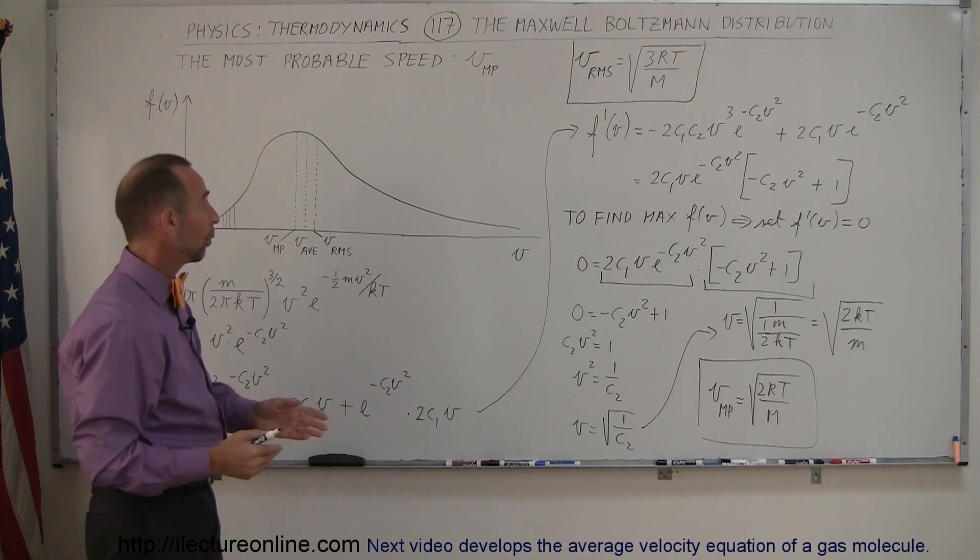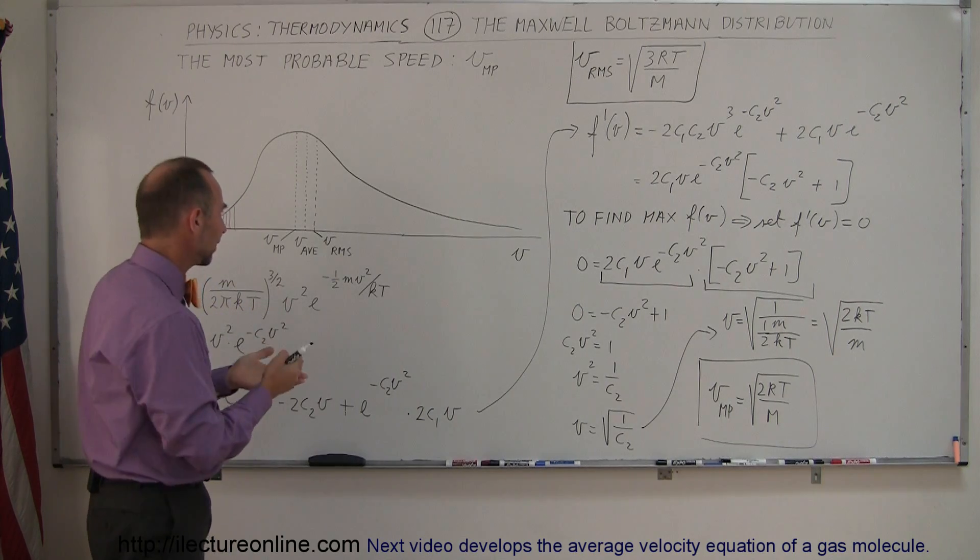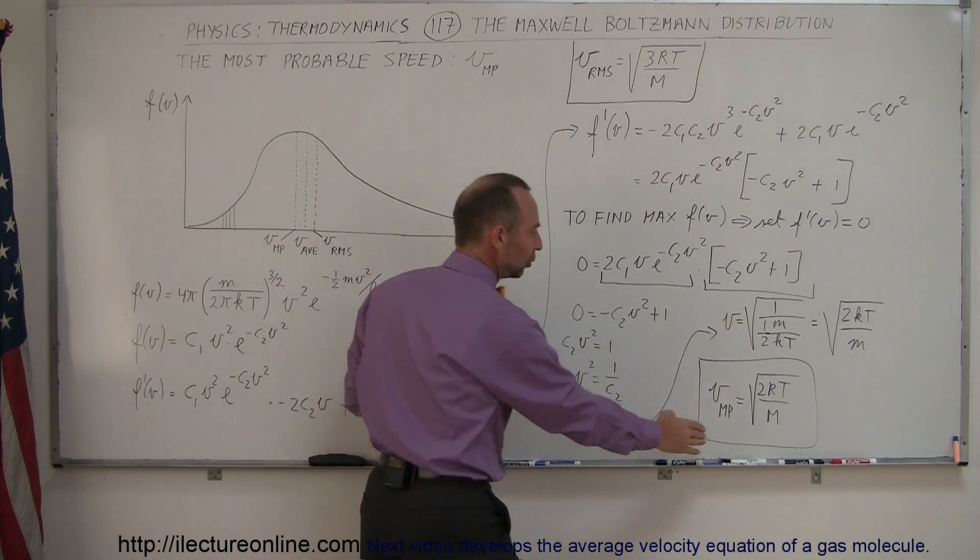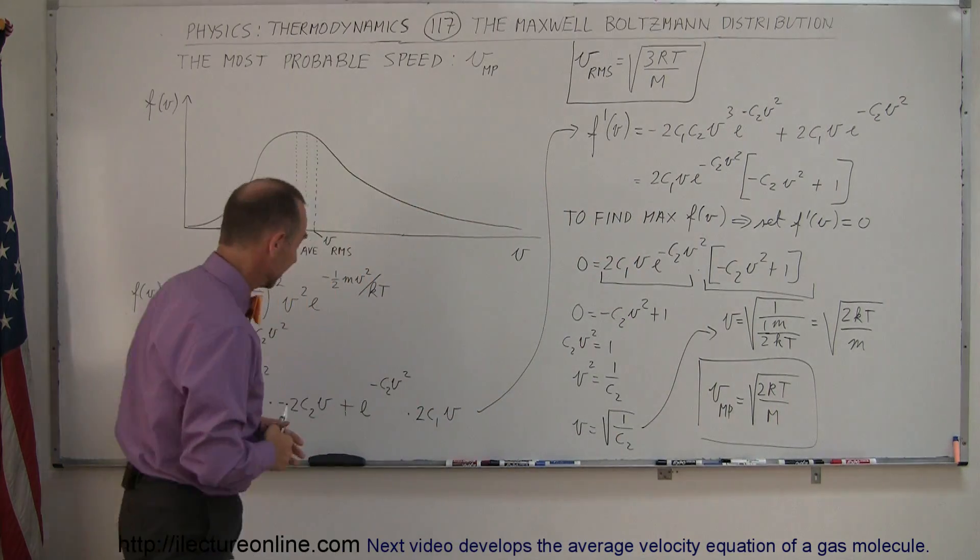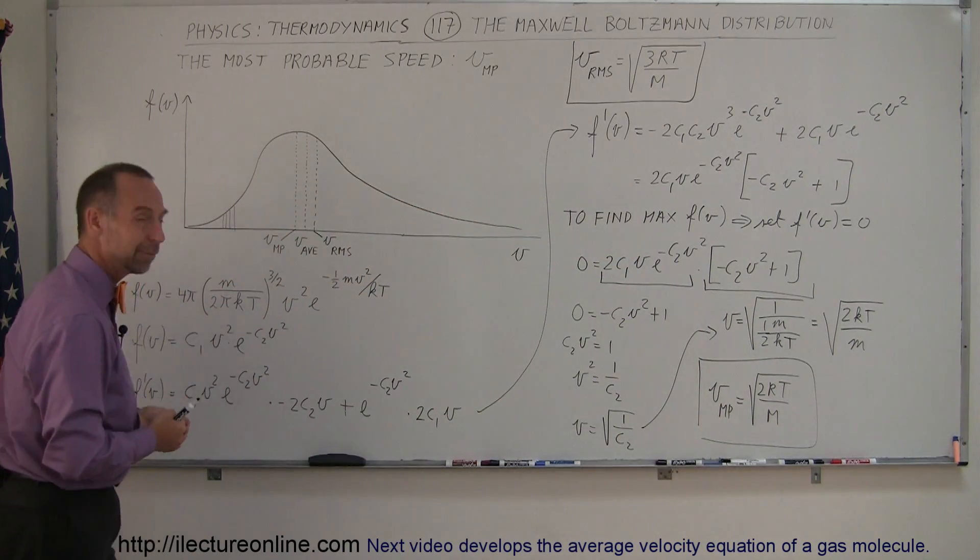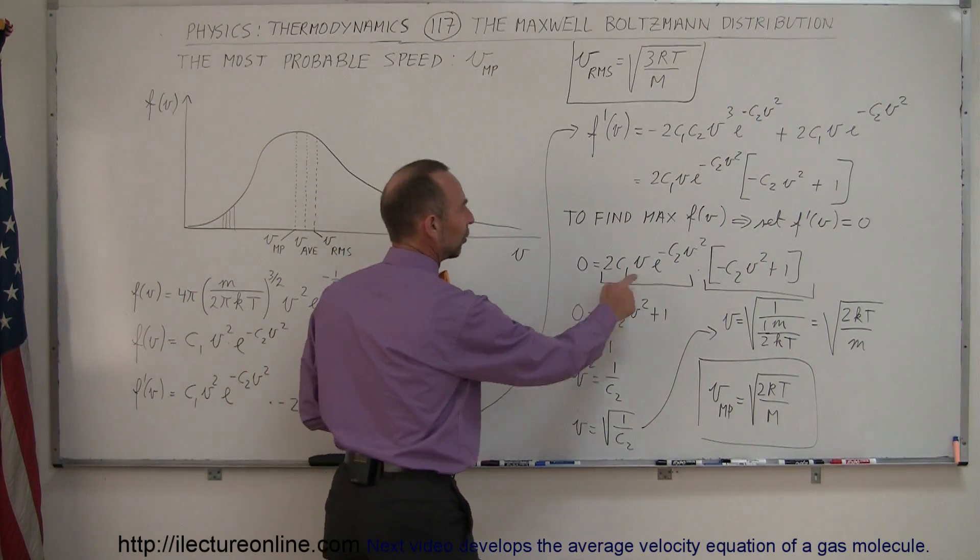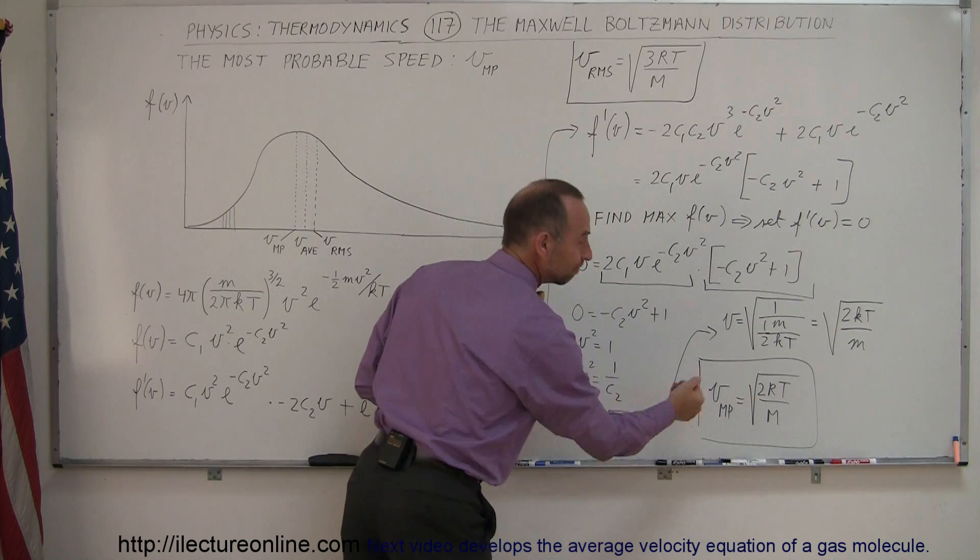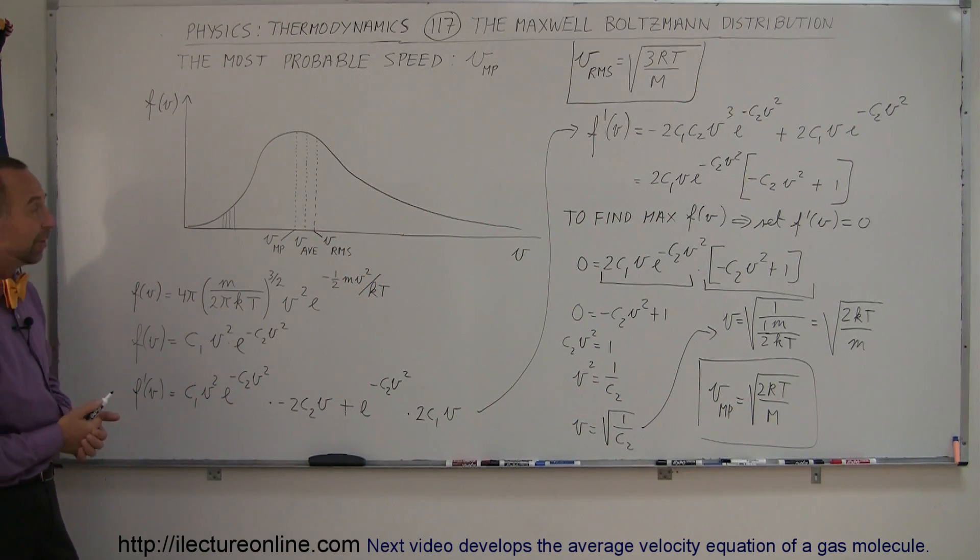So if someone says, what is the most probable velocity, the velocity that has the most molecules traveling at that velocity, it is equal to the square root of 2rt over m. And thanks to Maxwell and Boltzmann, we're coming up with this great equation. All we have to do is take the derivative, set equal to zero, solve for v, and there's the velocity. And that's how you find the most probable velocity in the Maxwell-Boltzmann distribution of velocities of the gas.